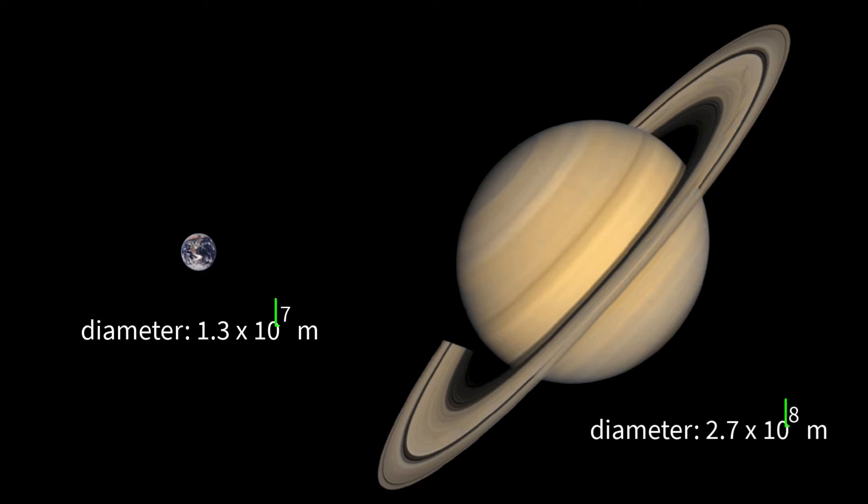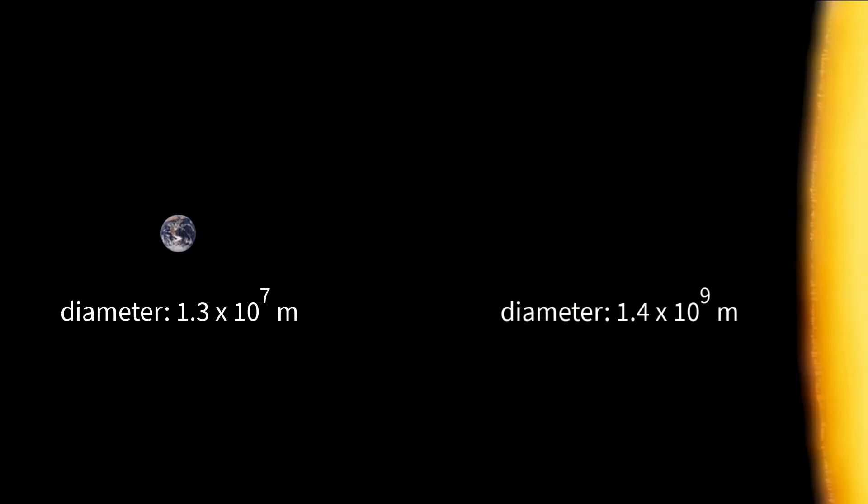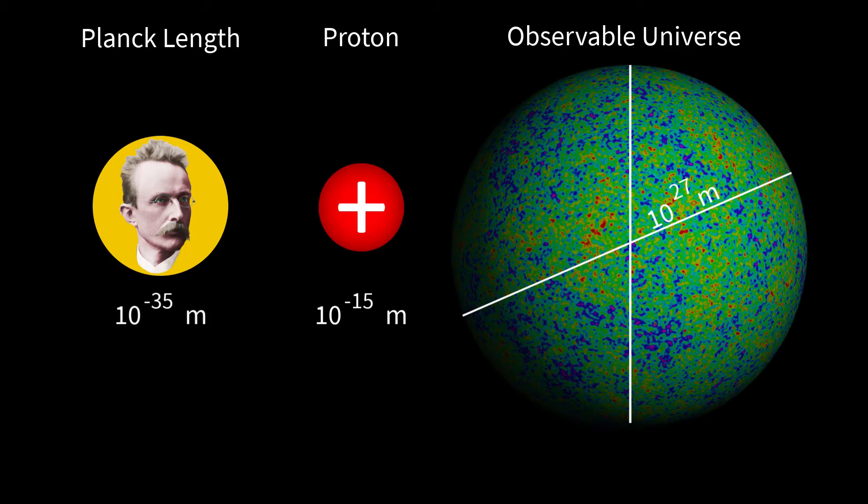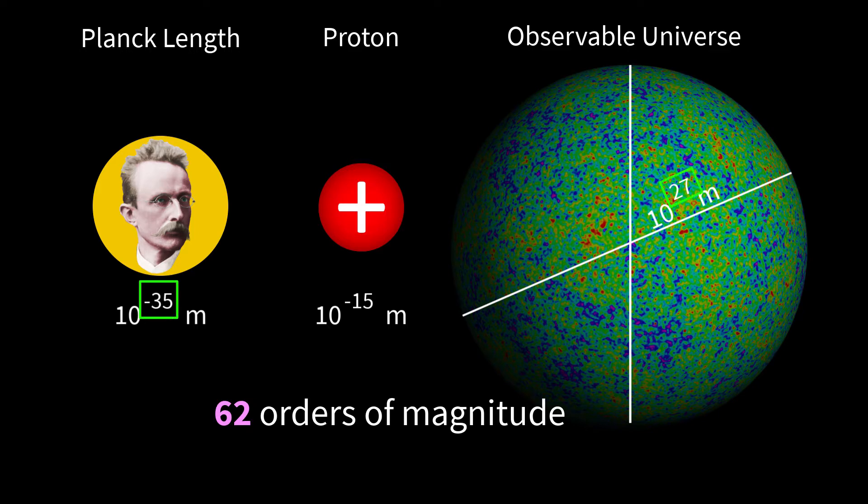The diameter of Saturn's rings is an order of magnitude bigger than Earth's diameter. The Sun's diameter is 2 orders of magnitude bigger than Earth's. And taking things to the limit, 62 orders of magnitude separate the smallest straight length with physical meaning from the largest.